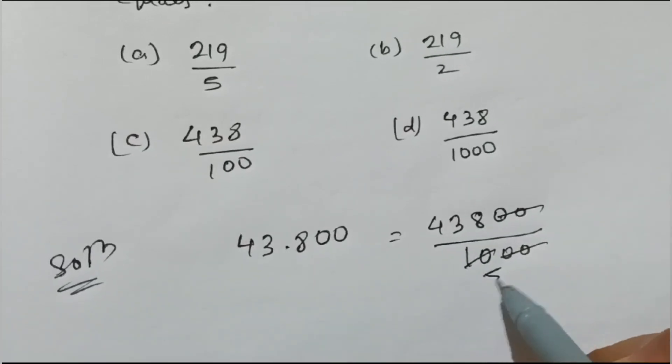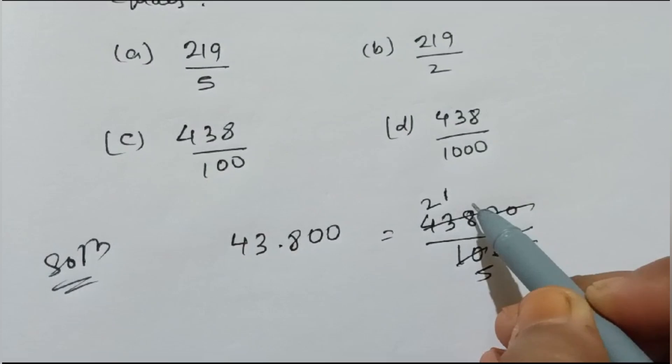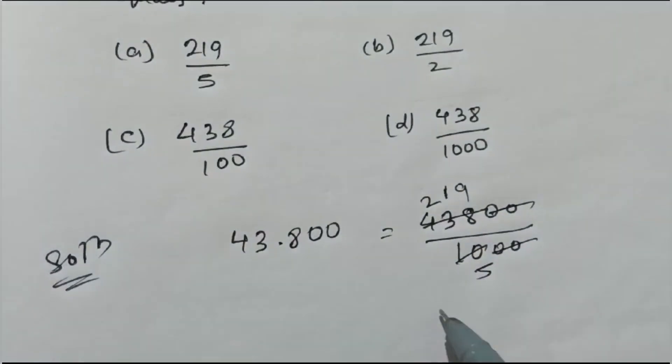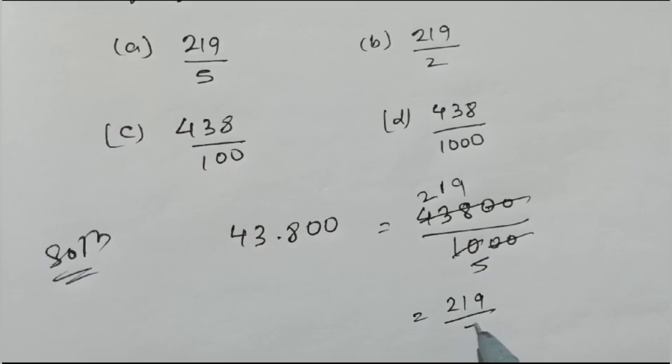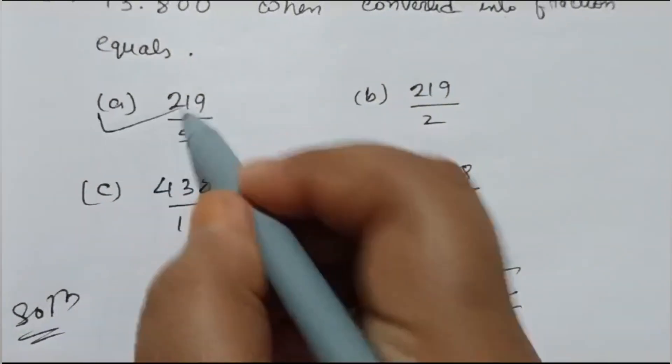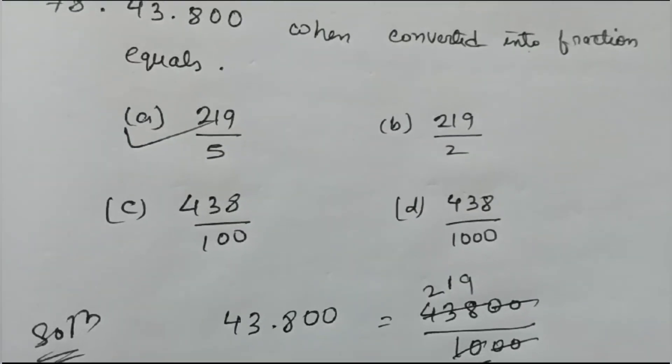Then divide by 2 repeatedly - cut zeros, simplify step by step. You get 219 by 5. So 219/5, option B is the answer. Okay, so that's how we understood it.